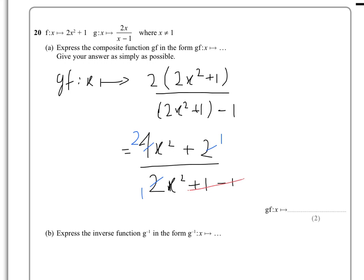So then what you end up with is 2 times 2x squared plus 1 over x squared. So that's part A.